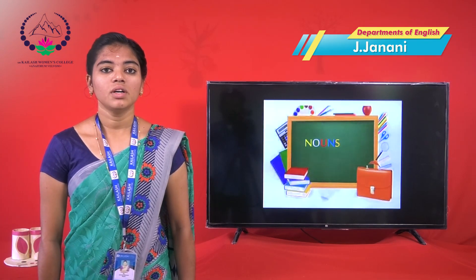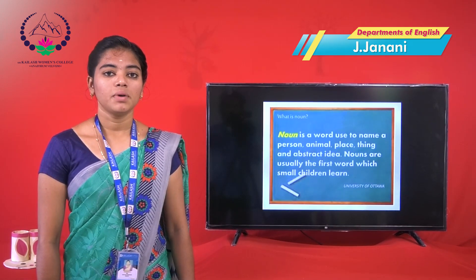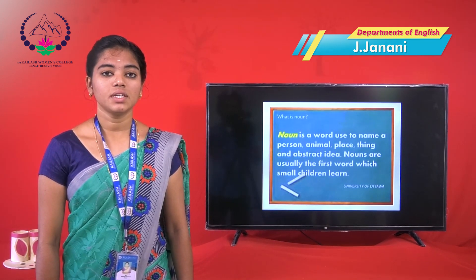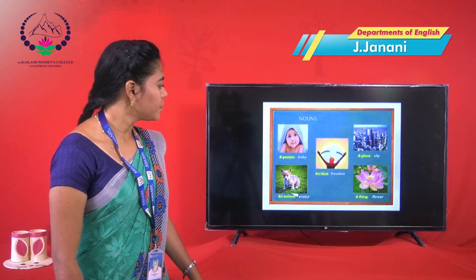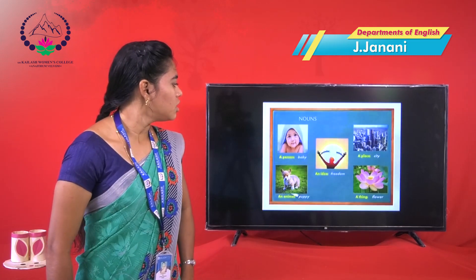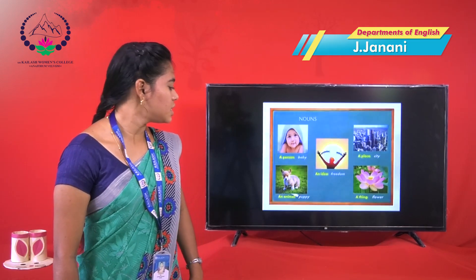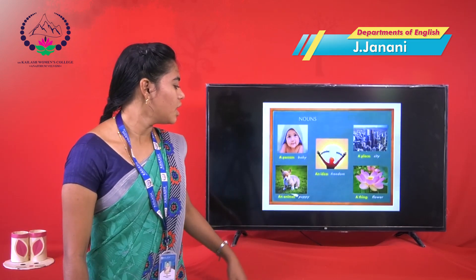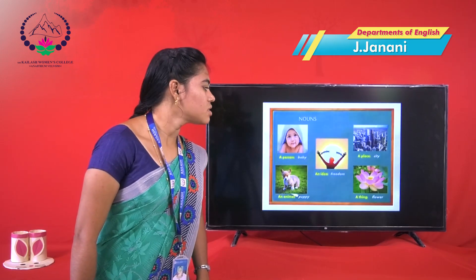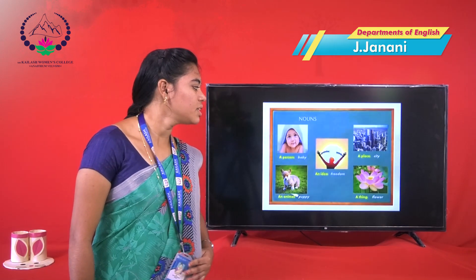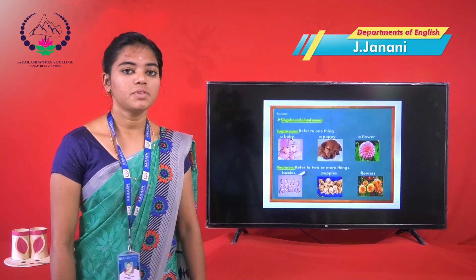What is a noun? A noun represents a person, place, thing, or animal. For example, a person is like a baby, an animal like a puppy, a place like a city, and things like a floor.